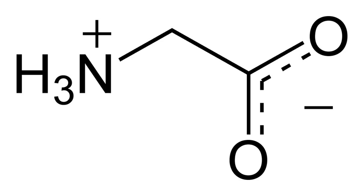Glycine is an inhibitory neurotransmitter in the central nervous system, especially in the spinal cord, brainstem, and retina. When glycine receptors are activated, chloride enters the neuron via ionotropic receptors, causing an inhibitory postsynaptic potential. Strychnine is a strong antagonist at ionotropic glycine receptors, whereas bicuculline is a weak one. Glycine is a required co-agonist along with glutamate for NMDA receptors. In contrast to the inhibitory role of glycine in the spinal cord, this behavior is facilitated at the NMDA glutamatergic receptors, which are excitatory. The LD50 of glycine is 7930 mg per kg in rats (oral), and it usually causes death by hyperexcitability.